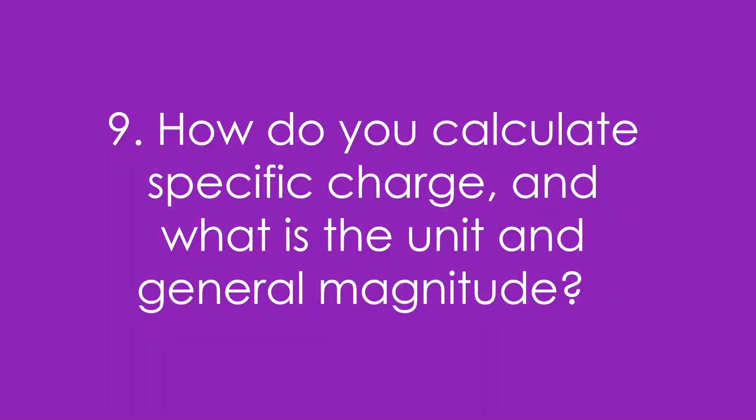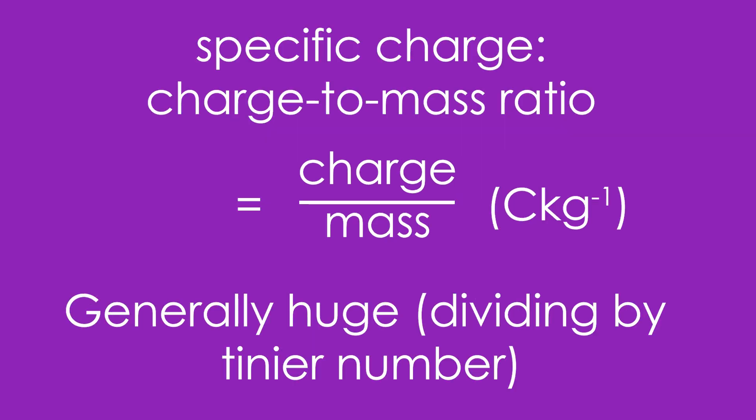9. How do you calculate specific charge, and what is the unit and general magnitude? In other words, how big is it? Specific charge is also known as the charge to mass ratio, so that's charge divided by mass, so the units are coulombs per kilogram. Generally huge, because even though the charge is going to be small for particles, the mass is even smaller.